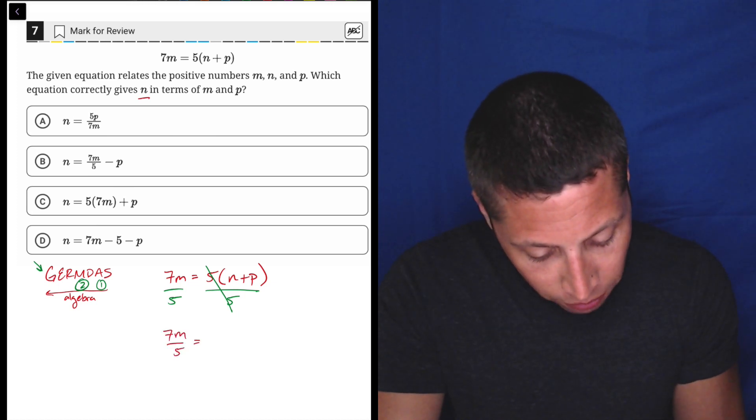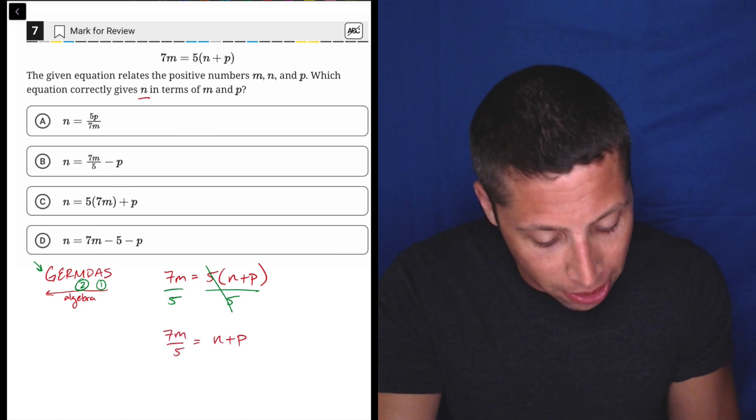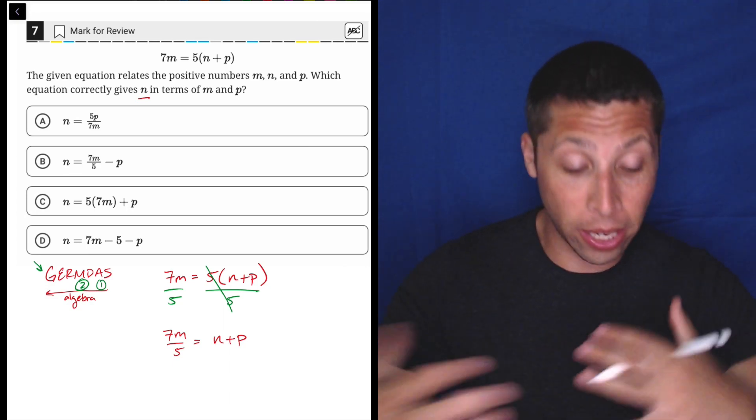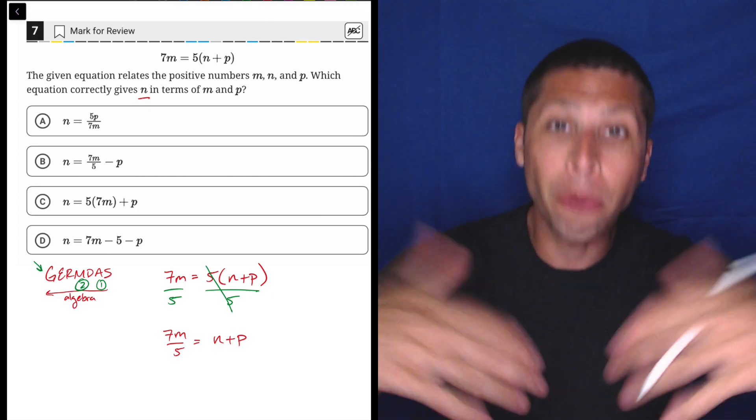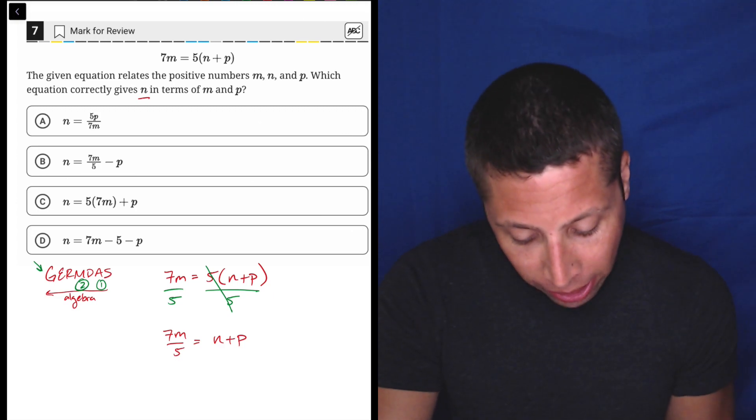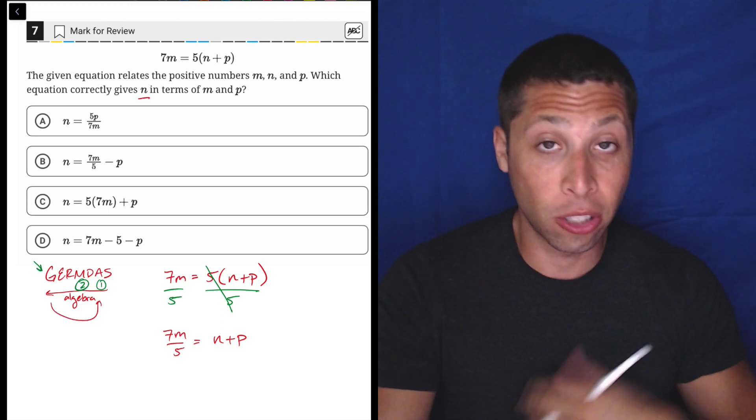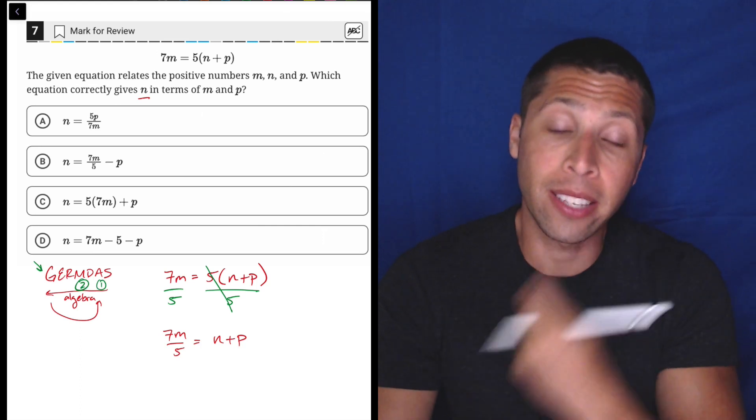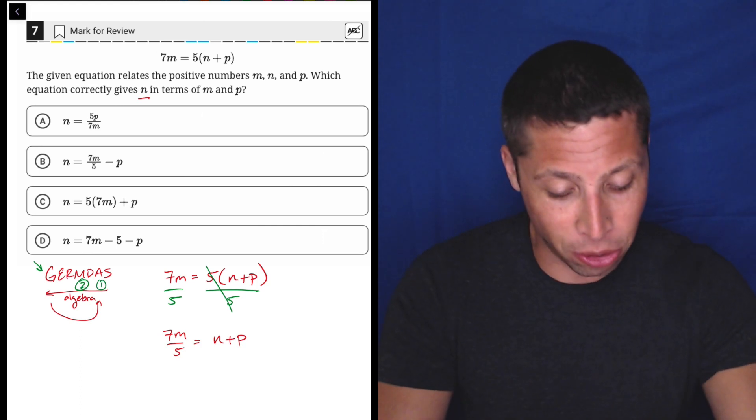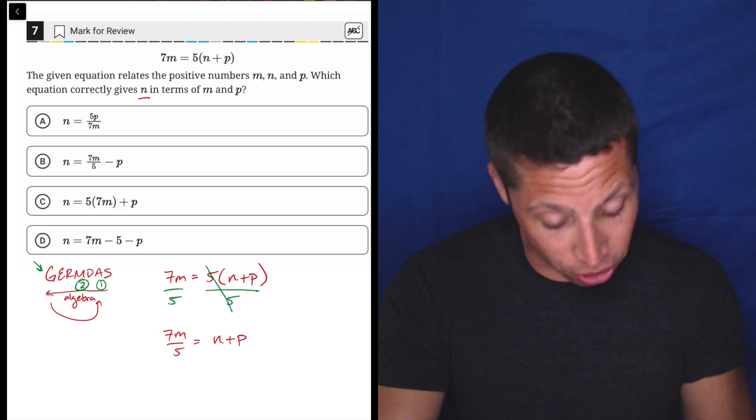7m over 5 is equal to n plus p. And notice now I'm not using the parentheses because everything around them is dead, is broken, and so now we've kind of broken into this grouping, and now that kind of resets things, right? So once we get to the end of the line with GEMDAS, we go back to the start, and each grouping is kind of treated like its own mini-equation. And now again, our first step is to do addition and subtraction, and now we can do it, right?